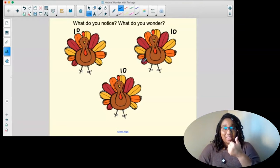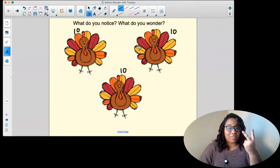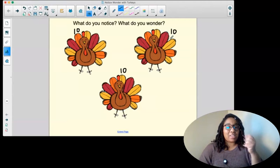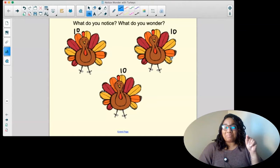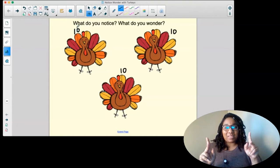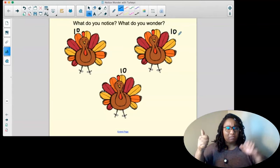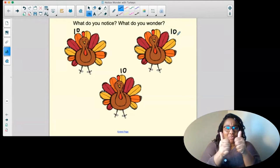Ready? Ten, eleven, twelve, thirteen, fourteen, fifteen, sixteen, seventeen, eighteen, nineteen, twenty. Okay, so when we put this ten together and this ten together, we got twenty feathers.